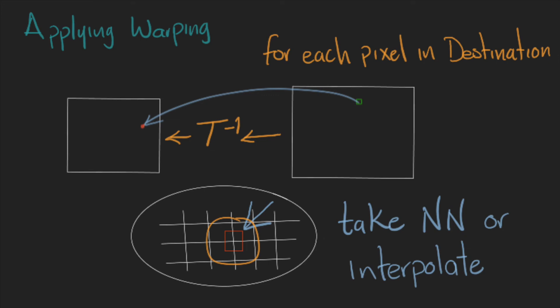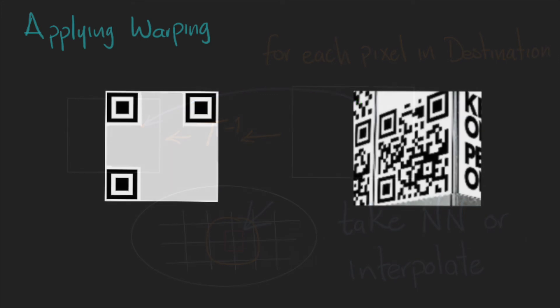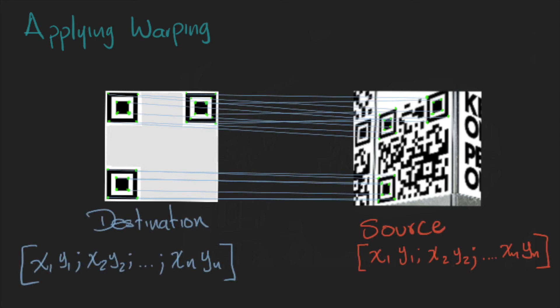Let's see it in an example. So, we have a picture of a QR code that we want to register, and we have a template that will be our destination image.